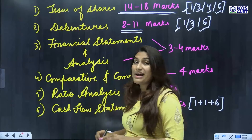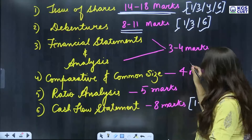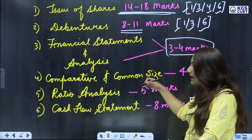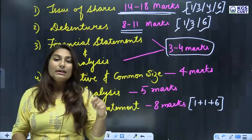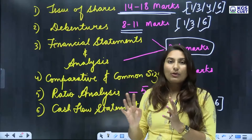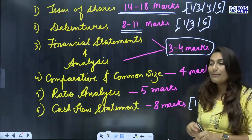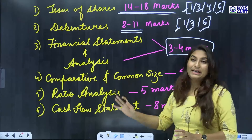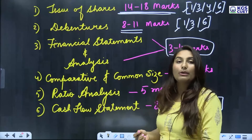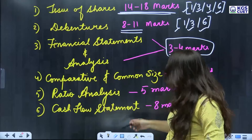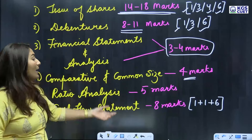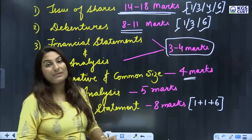Financial statements and analysis can get you 3 to 4 marks in the exam. Comparative and common size statements are the easiest — if you skip these, you can lose 4 marks, so please revise them first. For ratio analysis, revise all the formulas once before you go to the exam. You can get around 5 marks equal to ratio analysis.